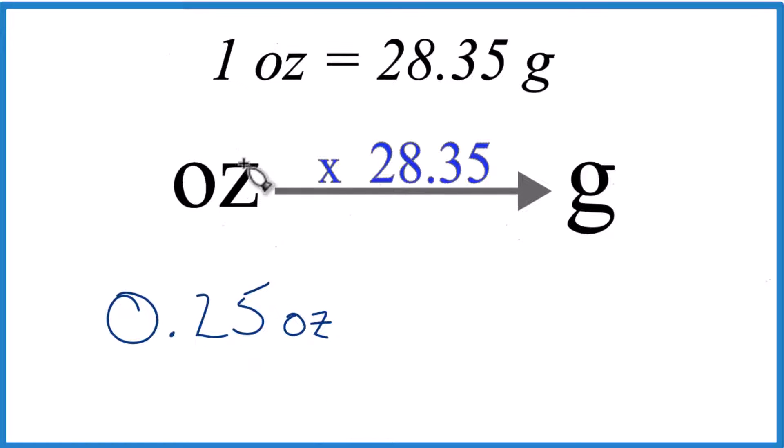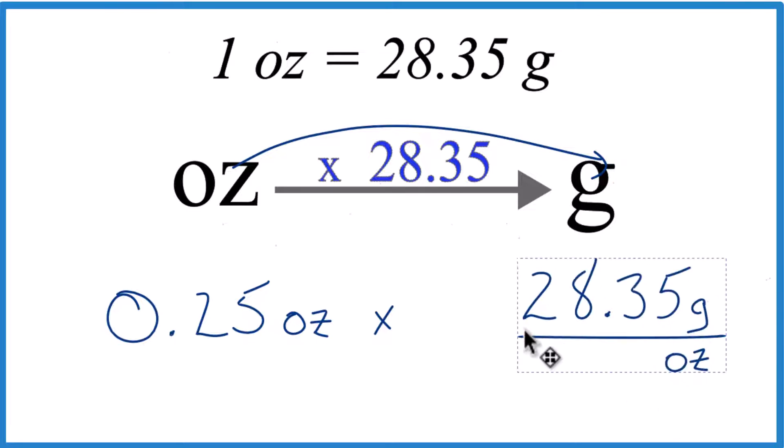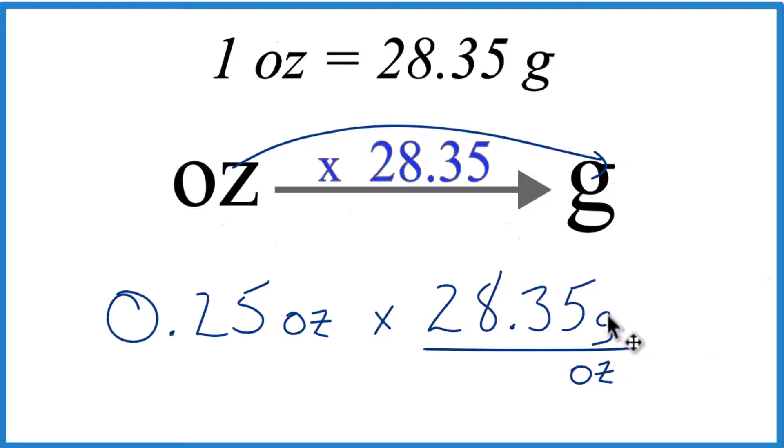So now, when we go from ounces to grams, we just multiply by 28.35, like this. And that's 28.35 grams per ounce, because there are 28.35 grams in 1 ounce. So that's where this number comes from.